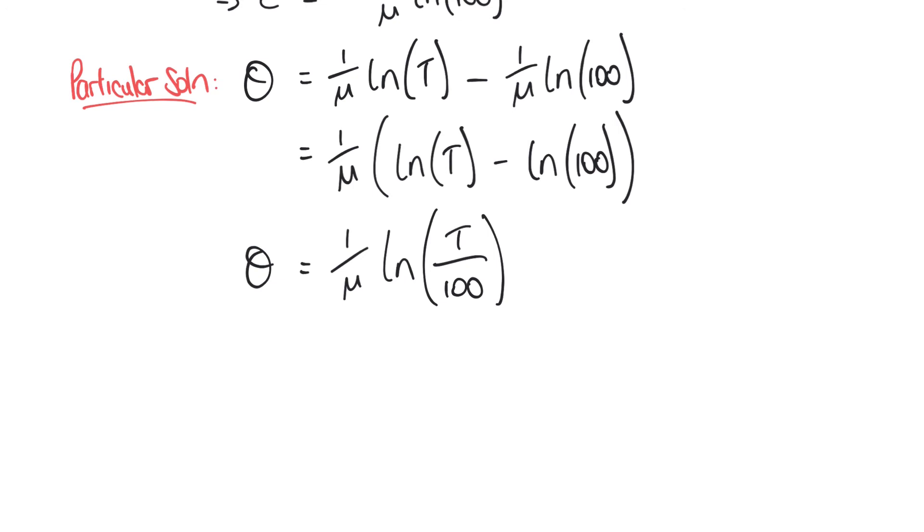So returning back to our original question, part a asked us to find the tension T. And so we need to rearrange our equation here in terms of T equals rather than theta equals. And so the way we're going to do this, first of all, is to multiply both sides by μ. So now we have ln(T/100) equals μθ.